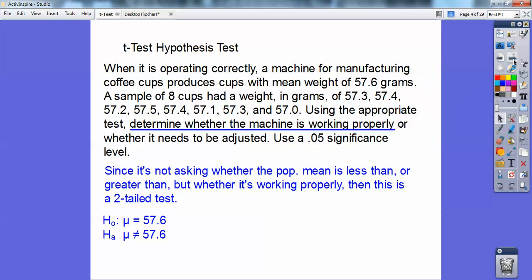My hypotheses are going to be: my null hypothesis is always no change, so it equals the mean that they gave me, 57.6. And my alternative hypothesis is a two-tailed, it is not equal to 57.6.